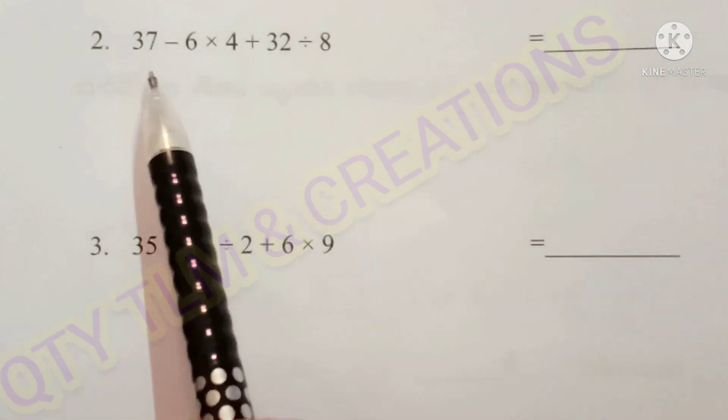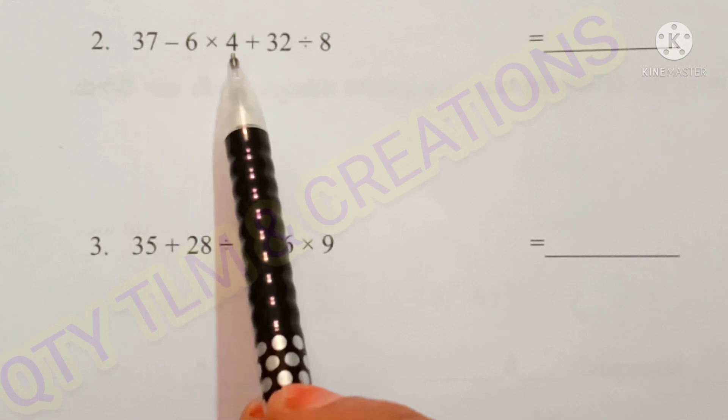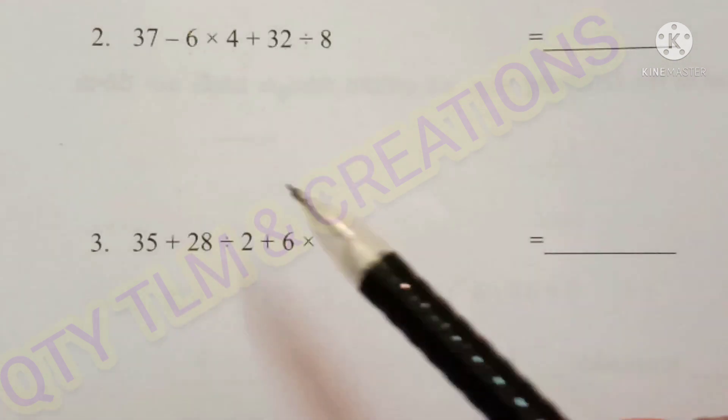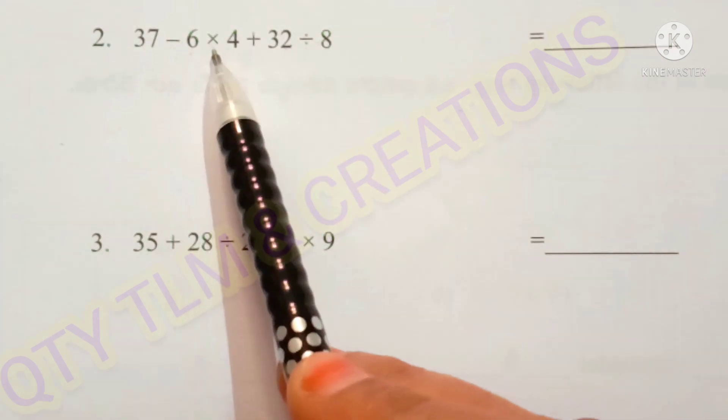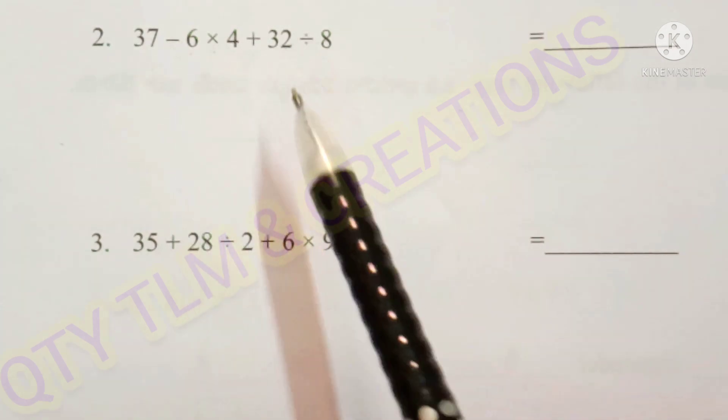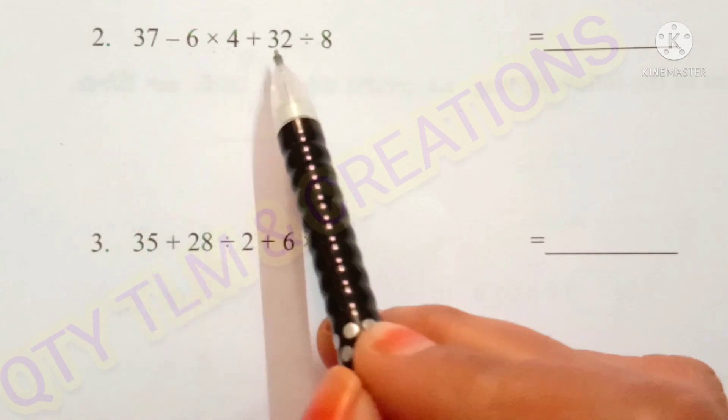Next question: 37 minus 6 into 4 plus 32 divided by 8. This sum also contains 4 operations: subtraction, multiplication, addition and division.